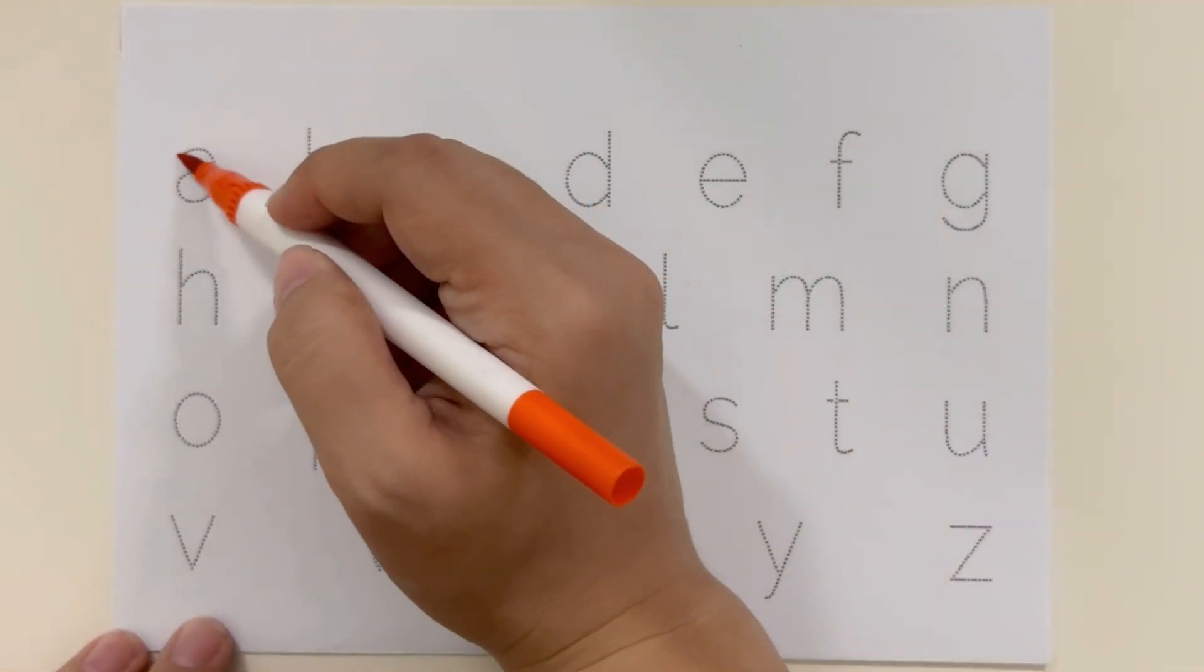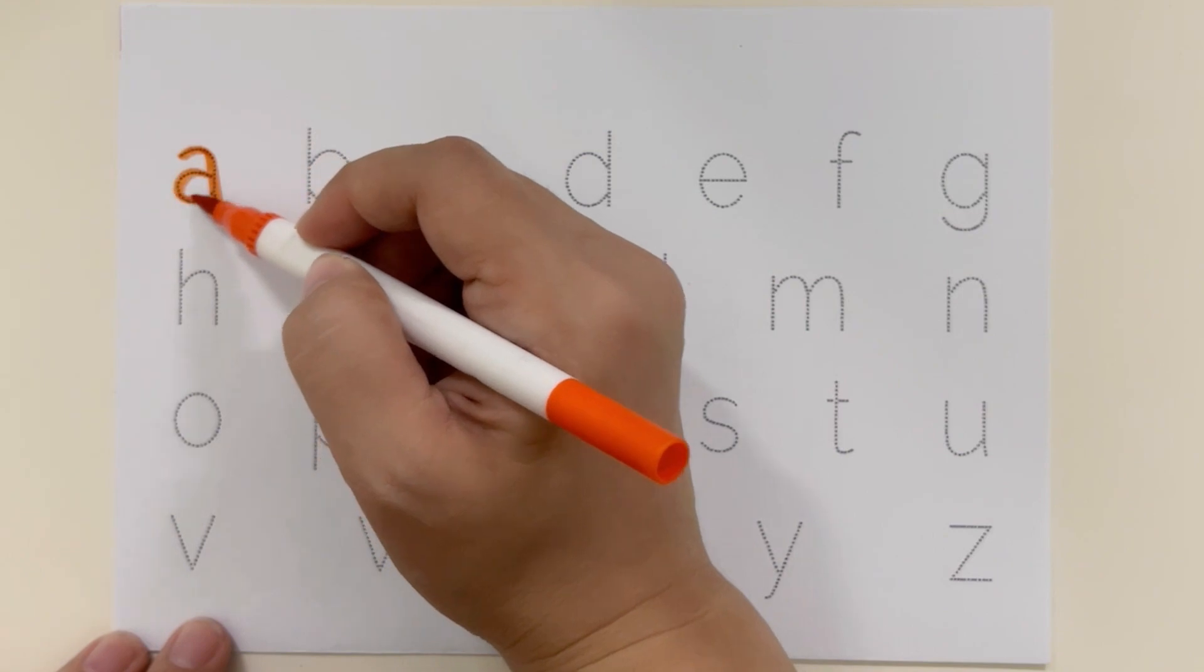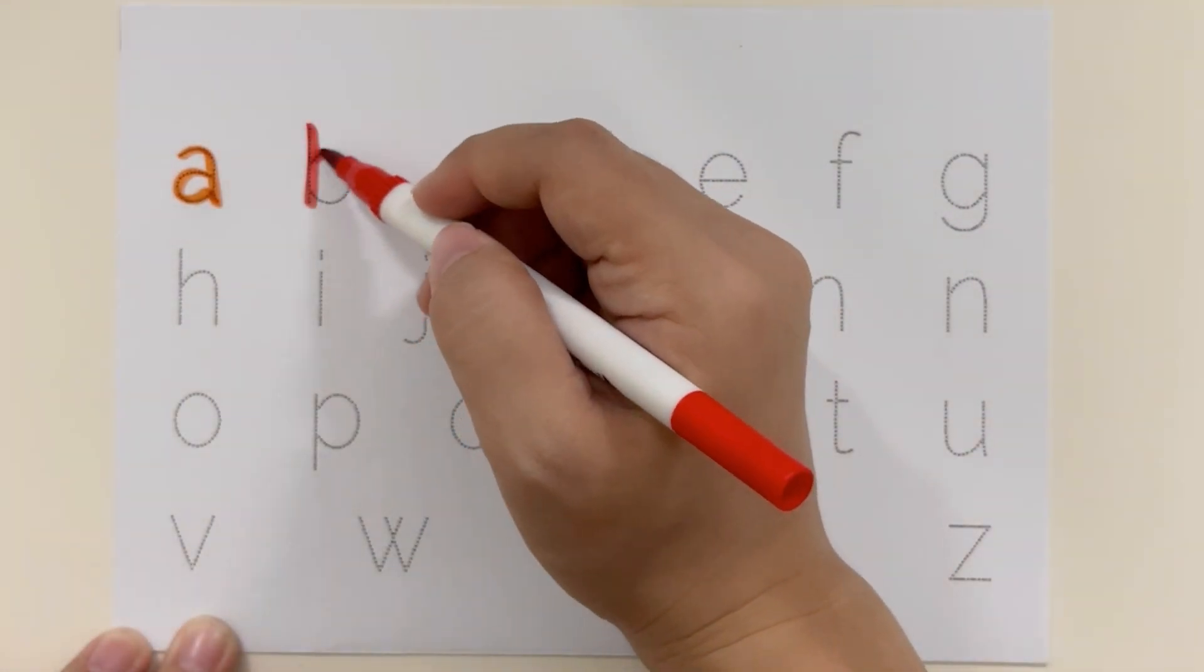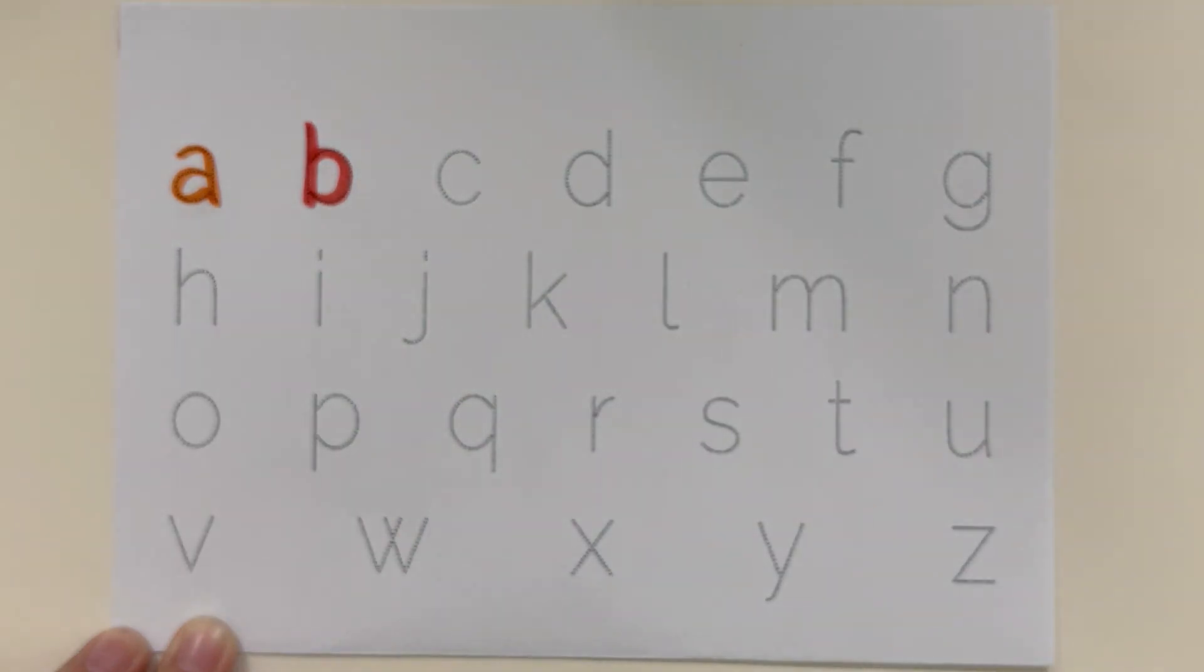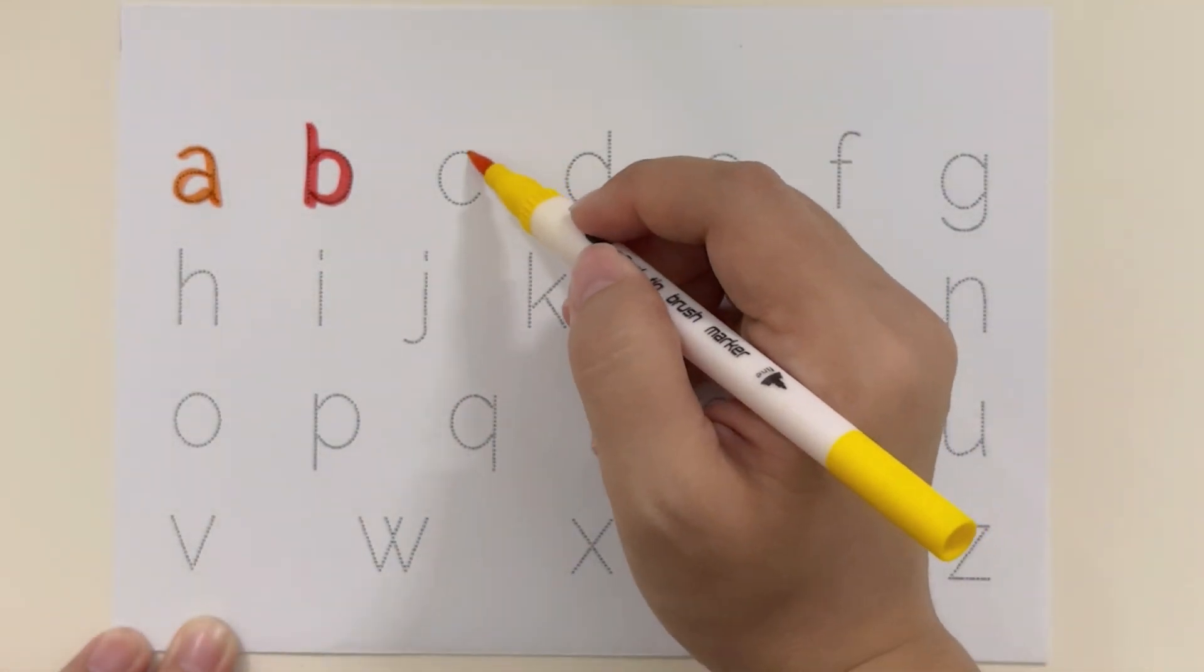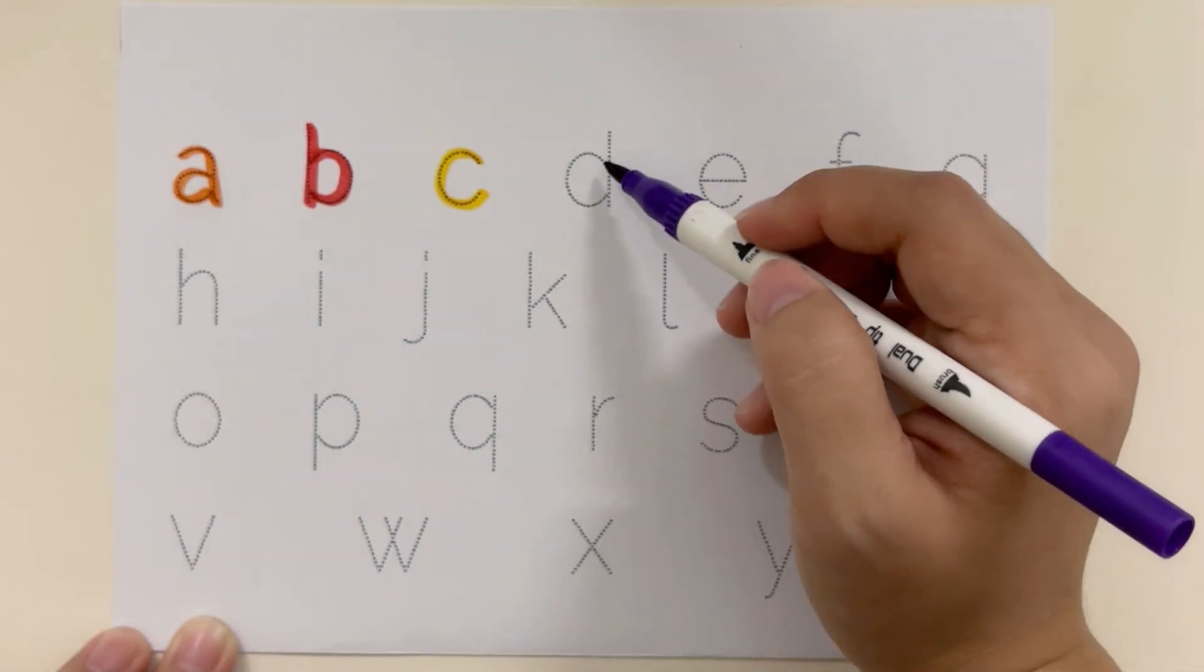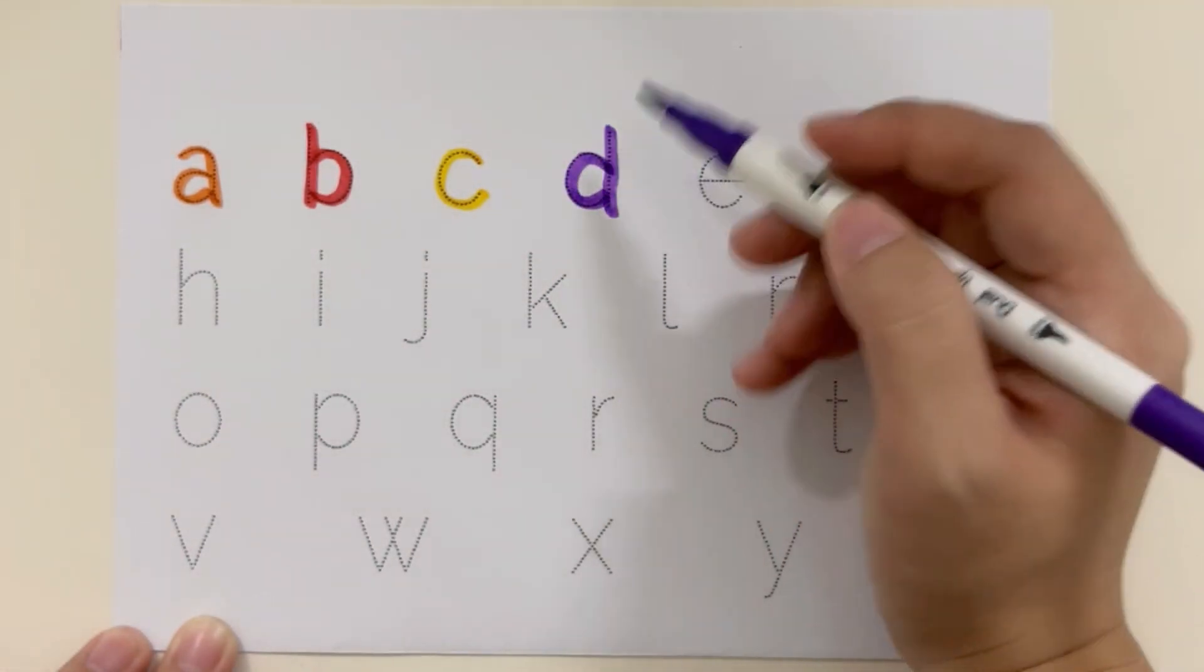A. A for apple. B. B for ball. C. C for cat. D. D for dog.